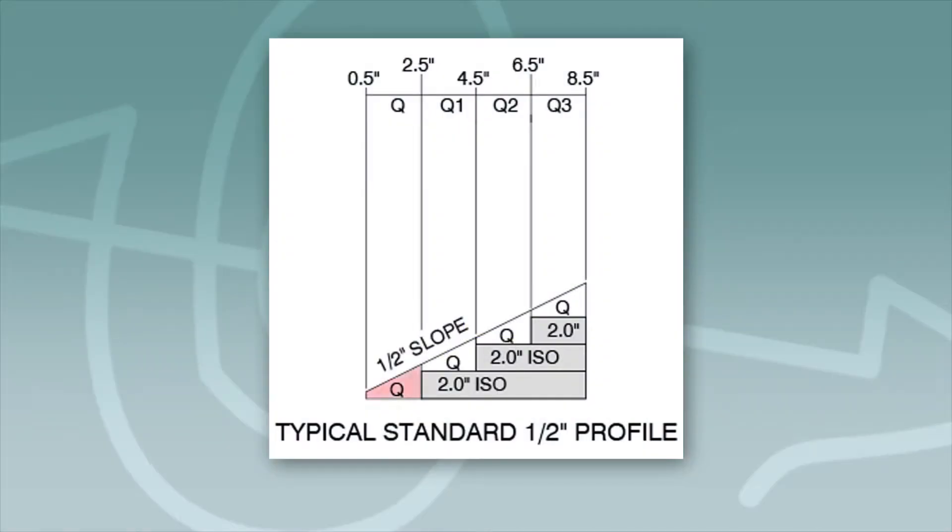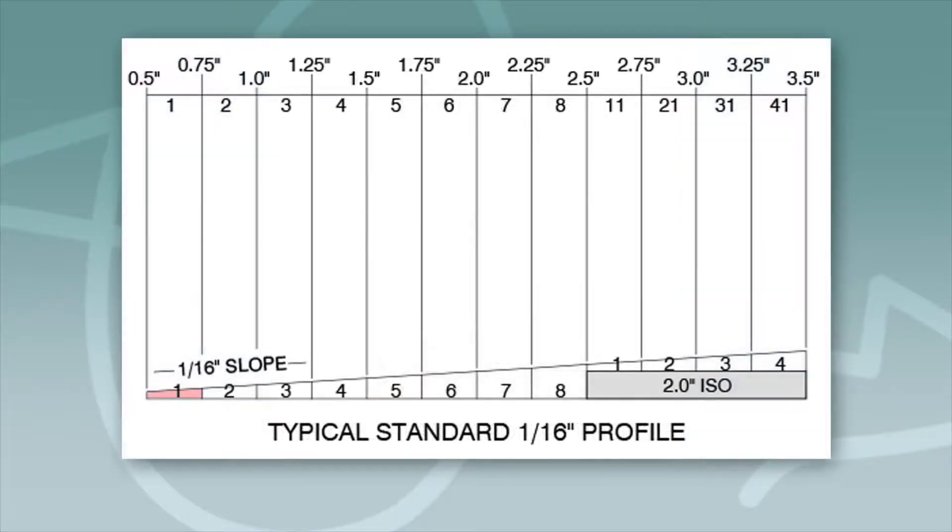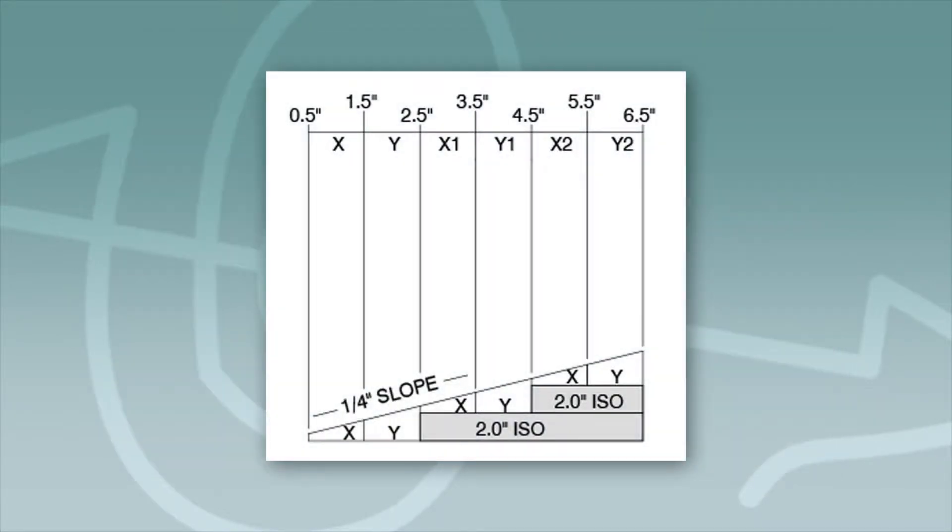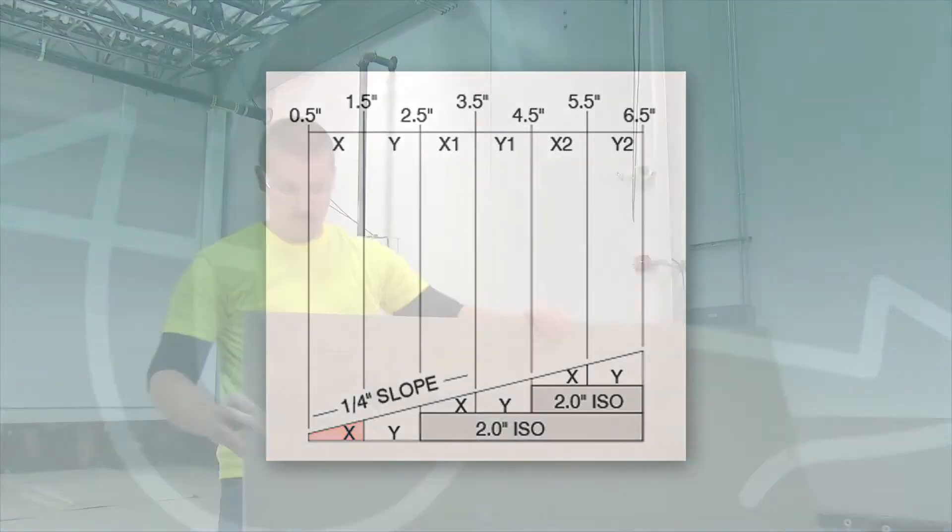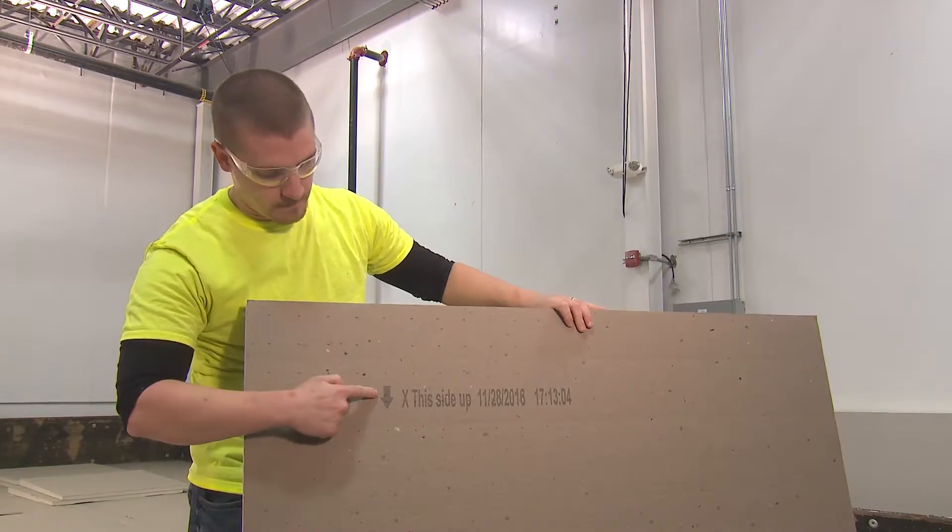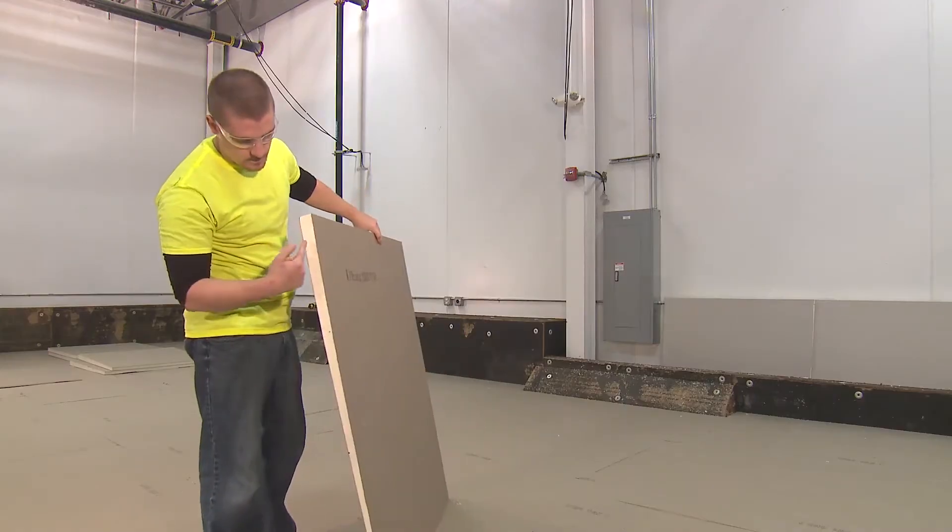We start with our first tapered panel. This depends on the tapered system design and the minimum thickness used. In this case, we will be starting with the smaller panel in a 1/4 inch system, an X panel. X panels run from 0.5 inches to 1.5 inches.